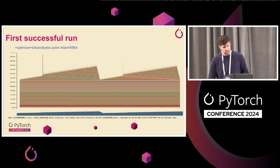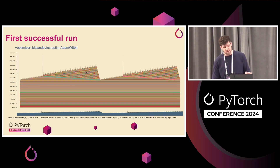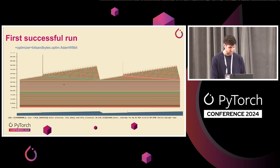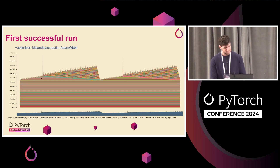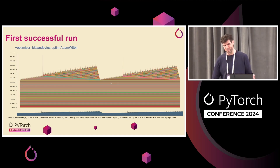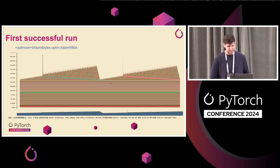Continuing with this example, we have some big spike here. This is two iterations — forward and backward. There's a forward, big spike, backward, forward, big spike, backward. What's the big spike? I think Daniel alluded to it before — it's the cross-entropy loss, so we need to do something about that.